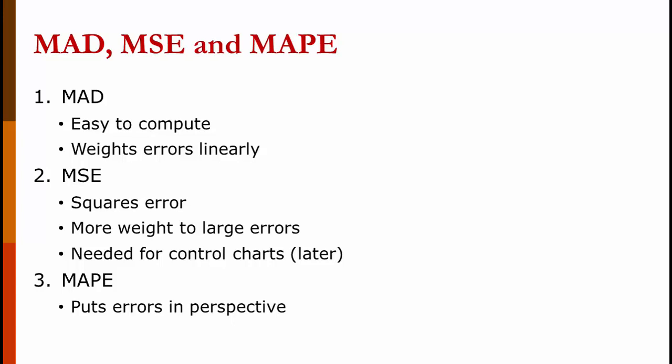The MAD is easiest to compute. It weights every error linearly. It's easy to understand. It's widely used. Mean squared error gives you squared error terms. It's roughly equivalent to the MAD value squared. However, it gives more weight to larger errors, though they're not exactly equivalent, and you need it for control charts.